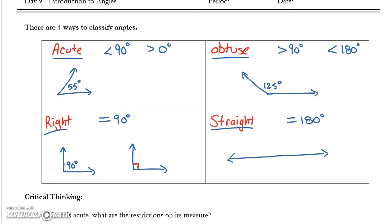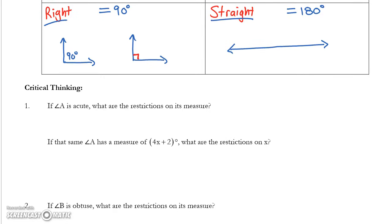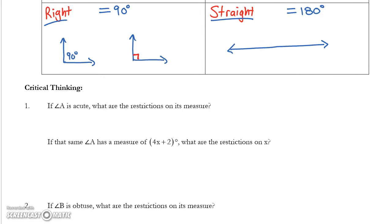Now, what are we going to ask you to do with that information? Number one down here in our critical thinking problems is a very good test or quiz type question. I would expect this on both our next quiz and our next test. It says that angle A is an acute angle. What are the restrictions on its measure?